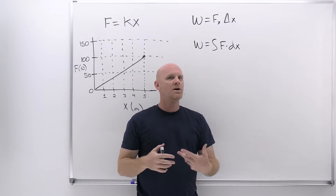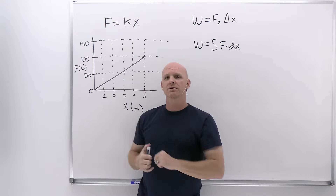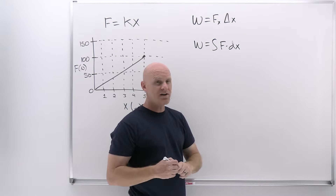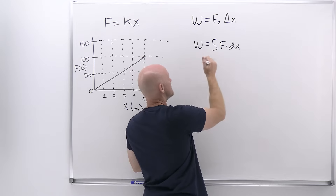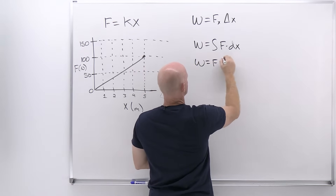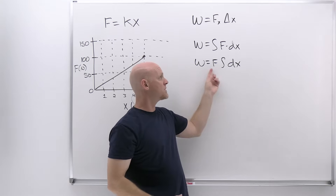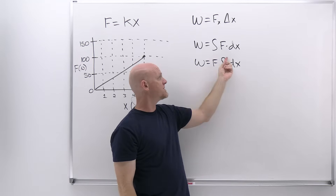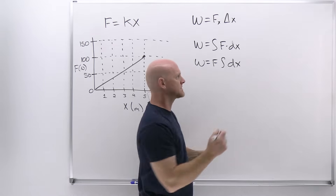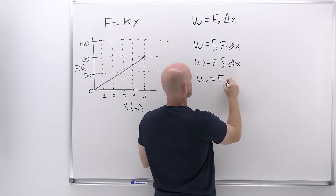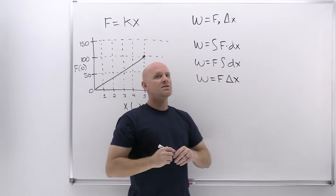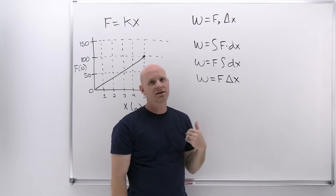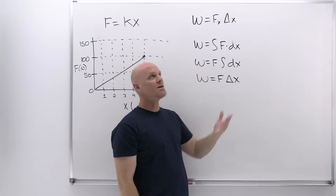This is instructive to explain why we're going to do what we do when we treat work with a varying force graphically. As long as you're dealing with a constant force — the only kind of problems we've dealt with up till now — a constant pulls out in front of the integral, and we get work equals force times the integral of dx. The integral of dx is simply x, and from x-initial to x-final, it's just delta x. You simply end up with the result we already had: W = F·Δx.